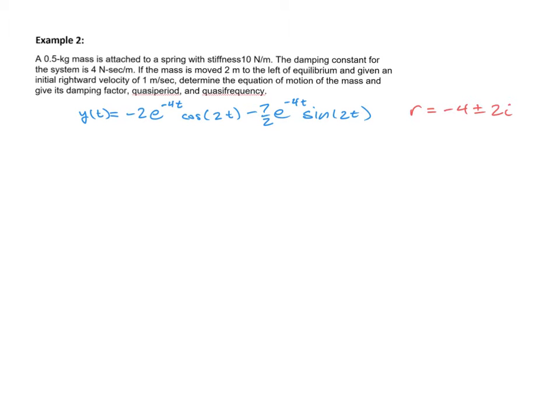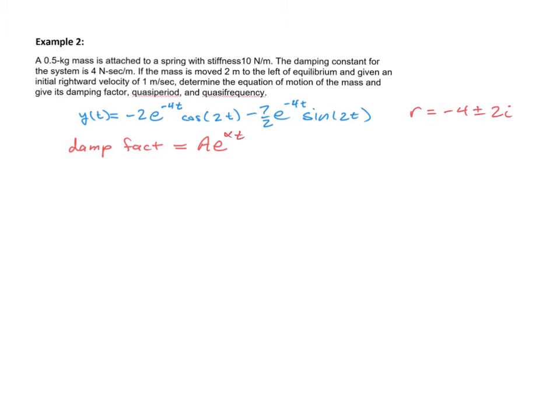The first thing the problem wants is the damping factor, which has a formula. We'll call it damp fact to abbreviate it. It equals A times e to the alpha t. For this problem, we need to find the value of A, which is the square root of the sum of the squares of C1 and C2. Our alpha was already given to us earlier as negative 4, which is the real number in the complex root that we found.